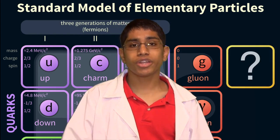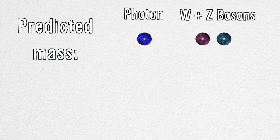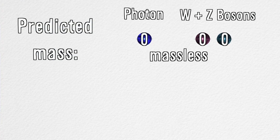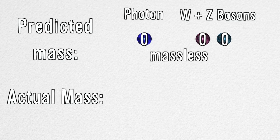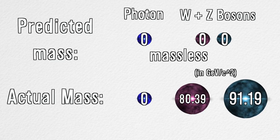But there was one tiny problem with the standard model. Prior to the 1960s, theories predicted that photons and W and Z bosons should all be massless. Experimentation showed that photons were indeed massless as predicted. However, the W and Z bosons had mass.